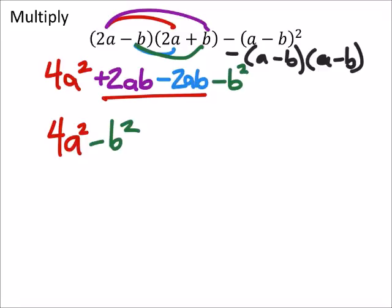And once again, if I distribute, I've got, so this would be minus a squared. I should put this in parentheses, by the way. So I'm subtracting this whole quantity.